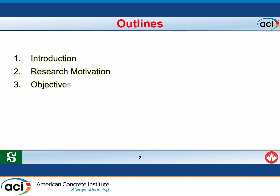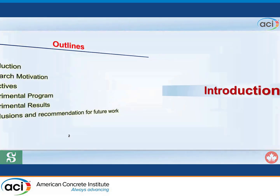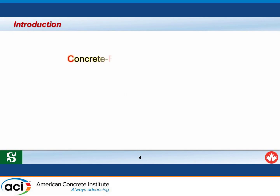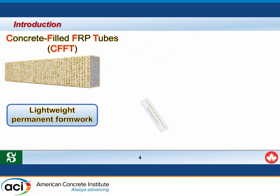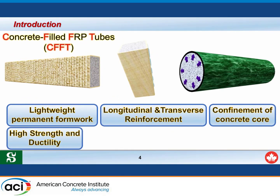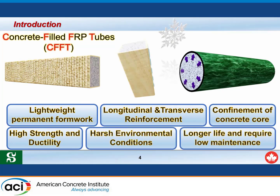Concrete-filled FRP tubes, or CFFT, have several advantages. The FRP tube serves as lightweight permanent formwork and provides longitudinal and transverse reinforcement. The tube confines the concrete core, increasing the strength, stiffness, and ductility of the CFFT member. CFFT members also have high resistance to harsh environmental conditions like those in North America, giving them longer life and requiring low maintenance. These advantages make CFFT members ideal candidates to replace conventional reinforced concrete members.